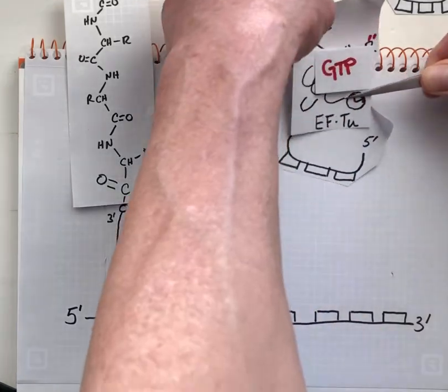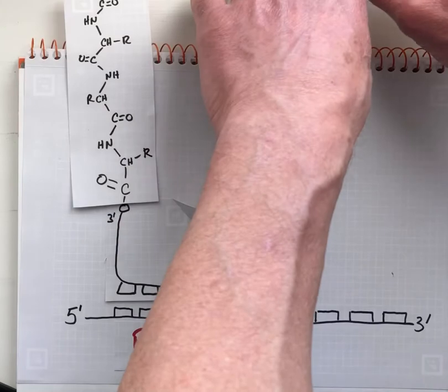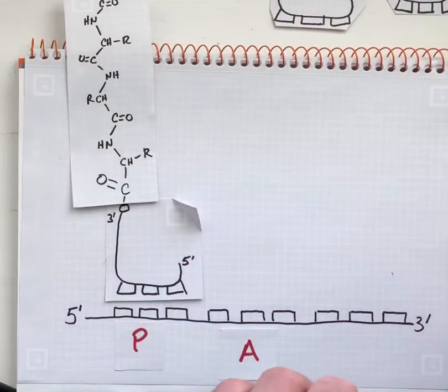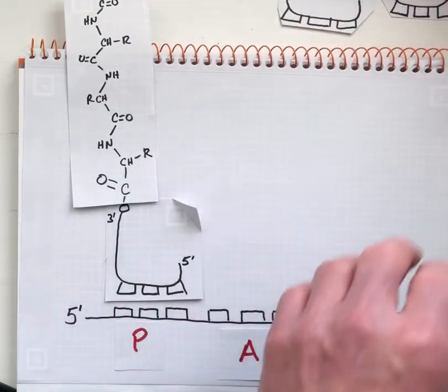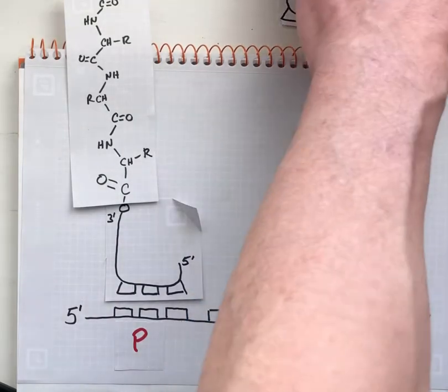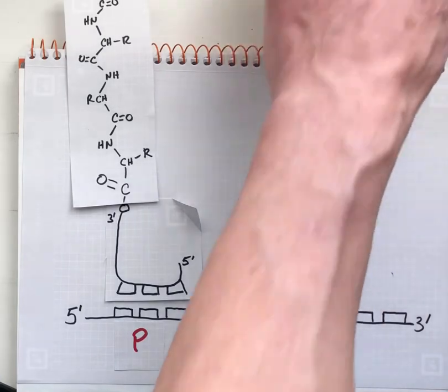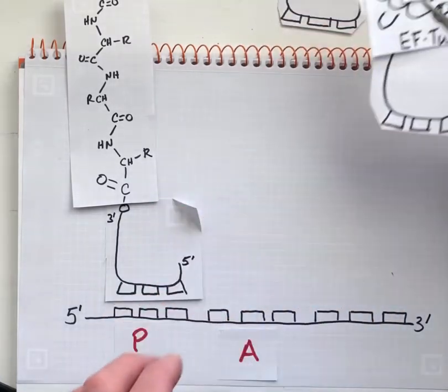...will leave the A site as a unit still attached to elongation factor Tu. And that gives opportunity for another elongation factor Tu aminoacyl tRNA complex to come into the A site.